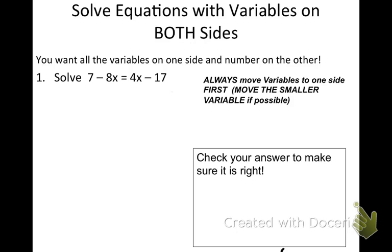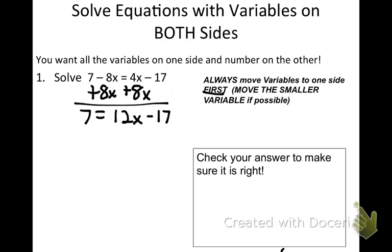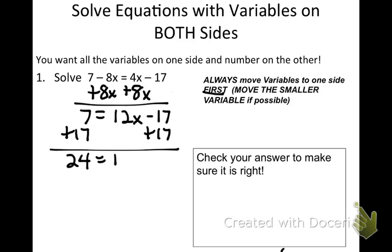The note here says: always move variables to one side first, and move the smaller variable. Negative 8x is smaller than 4x, so let's move that. We undo the math by adding 8x to both sides of the equal sign. So we'll have 7 equals 12x minus 17. Then we move our constants — I'm going to undo that math, so 24 equals 12x. My goal is to get x by itself, so since 12 is being multiplied, I can undo it by dividing. I get 2 equals x, which is the same as x equals 2.